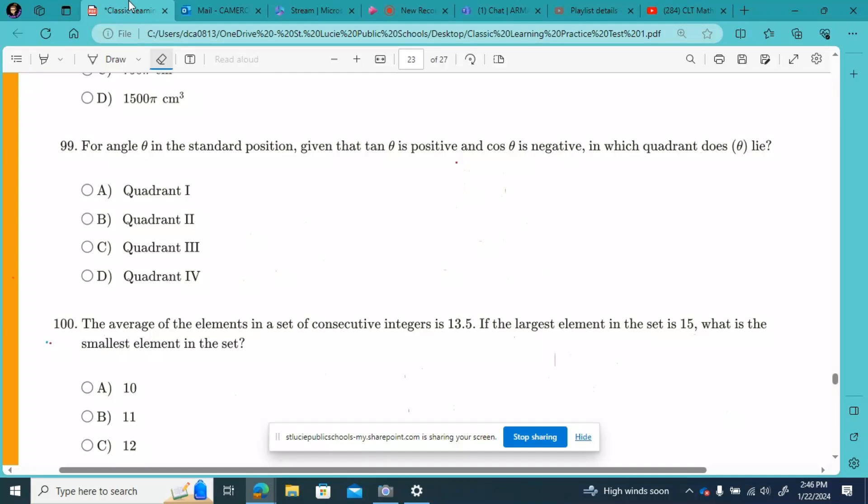All righty guys, we are moving along in our CLT math practice on practice test number one. We left off at 98, so the next one, question number 99. For angle theta in the standard position, given that tangent of theta is positive and cosine of theta is negative, in which quadrant does theta lie?